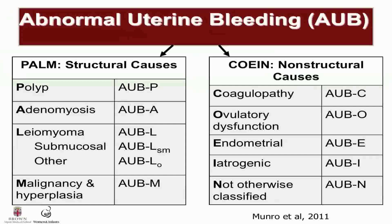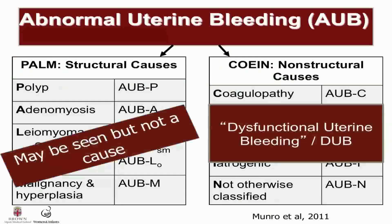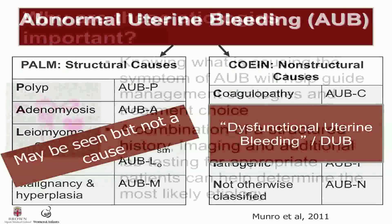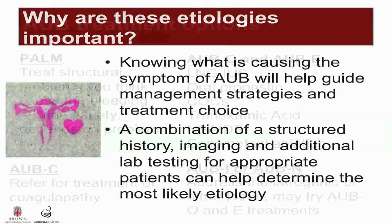To underscore the fact that dysfunctional uterine bleeding should no longer be used as a term, and that structural causes like polyps and leiomyoma may be seen in the evaluation process for abnormal uterine bleeding but may not actually be the cause. The distinction between the symptoms and the etiologies is important because knowing what is causing the symptom of AUB will help guide the management strategies and treatment choice. A combination of a structured history with imaging and additional lab testing for appropriate patients can help determine the most likely etiology.